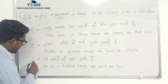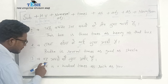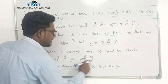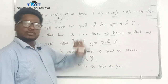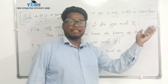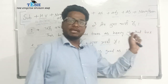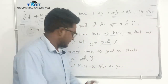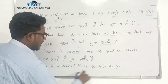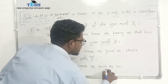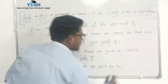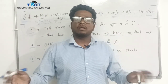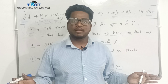Third example: वह आप से सौ गुना अमीर है — He is a hundred times as rich as you. Using the same structure: subject + is + 100 times + as + adjective + as + noun.